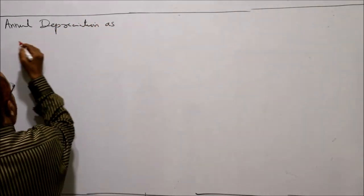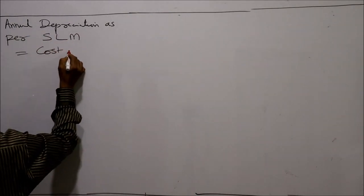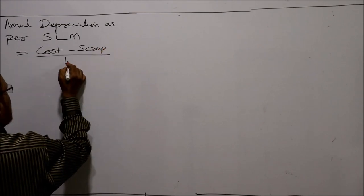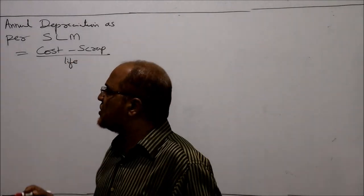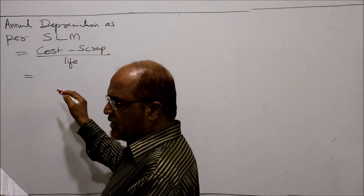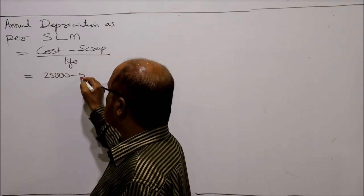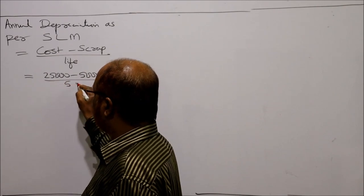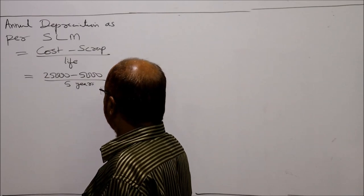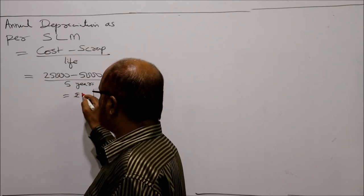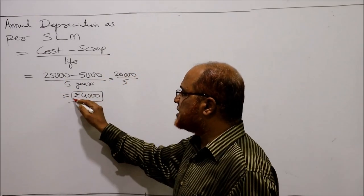We first calculate annual depreciation using the straight-line method formula: Annual Depreciation = (Cost − Scrap) / Life = (25,000 − 5,000) / 5 = 20,000 / 5 = Rs. 4,000 per year.